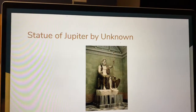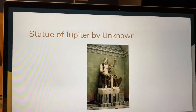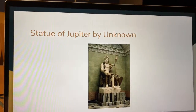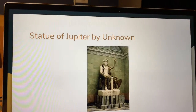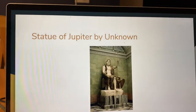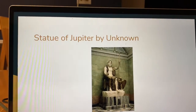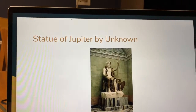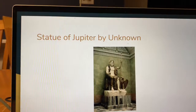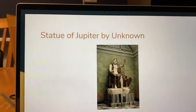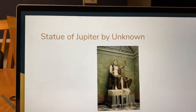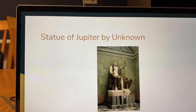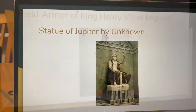The seventh artwork in my exhibit is the Statue of Jupiter. It is a marble sculpture with bronze plaster that is 137 inches tall. It was created by a Roman Flavian sculptor in ancient Rome at the end of the first century.